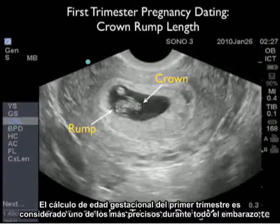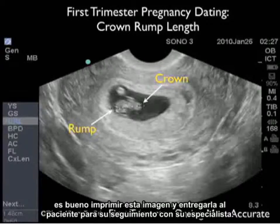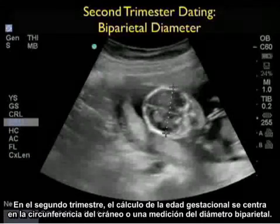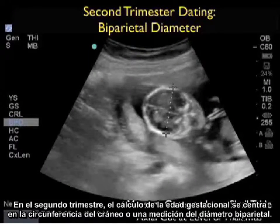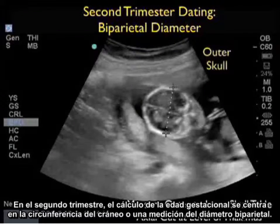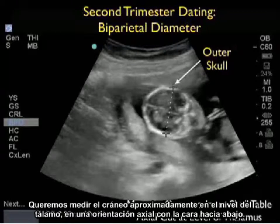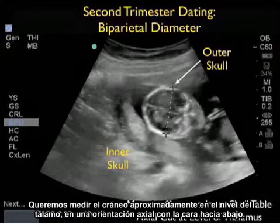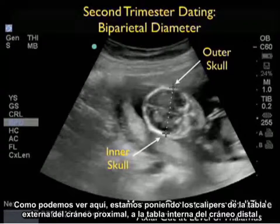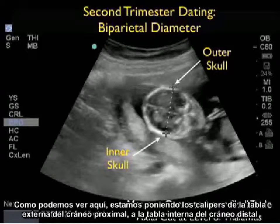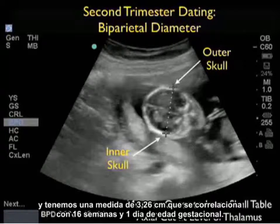Seven weeks and six days. As first trimester dating is considered one of the most accurate during the entire pregnancy, it's nice to print this image out and give to your patient to take for their follow-up visit with their OB-GYN. In the second trimester, dating of gestational age focuses on skull circumference, or measurement of the biparietal diameter. We measure the skull at about the level of the thalamus in an axial orientation with the face down. We're placing the calipers from the outer skull table proximally to the inner skull table distally, and we get a measurement of 3.26 centimeters, correlating to a 16-week, 1-day gestational age.